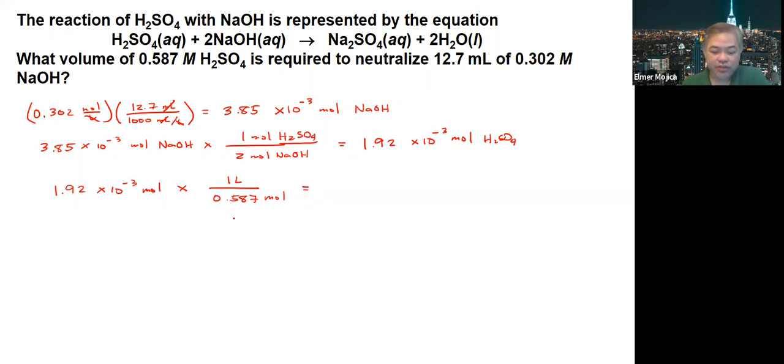If we look at the answer, you're going to get around 3.27 times 10 to the negative 3 liters, which multiplied by 1000 mL per liter will give you 3.27 mL.